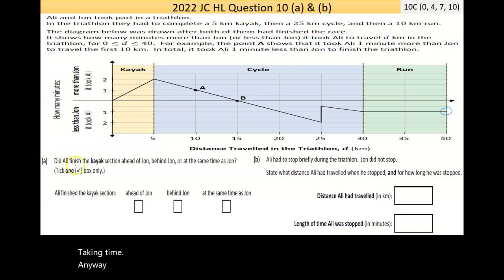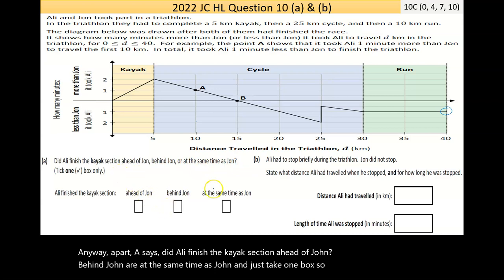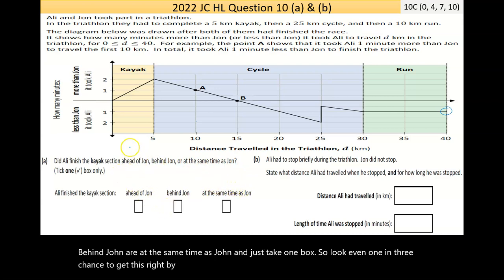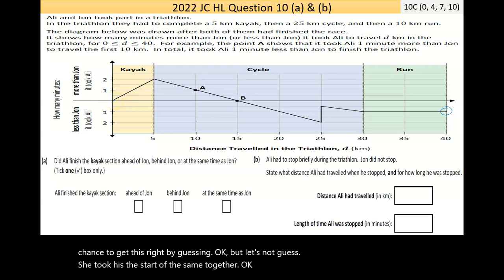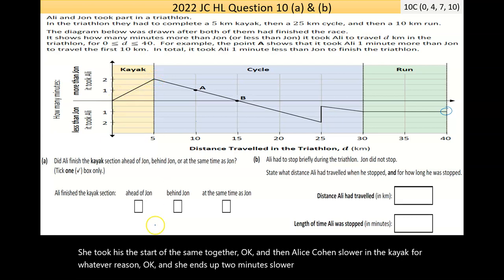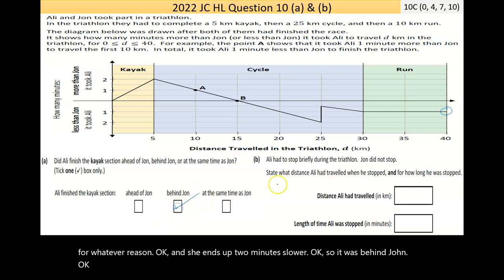Anyway, part A says, did Ali finish the kayak section ahead of John, behind John, or at the same time as John? So look, you have a one in three chance to get this right by guessing. But let's not guess. They took the start at the same together, and then Ali's going slower in the kayak for whatever reason, and she ends up two minutes slower. So it was behind John. They'll put a tick there. That should be the answer to that one.